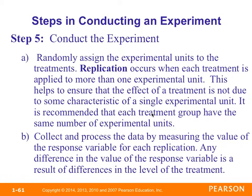Step five is to actually conduct the experiment. Randomly assign experimental units to the treatments. Replication occurs when each treatment is applied to more than one experimental unit, helping to ensure that the effect of a treatment is not due to some characteristic of a single unit. It is recommended that each treatment group have the same number of experimental units. Then collect and process the data by measuring the response variable for each replication — any differences in the response variable result from differences in the level of the treatment.